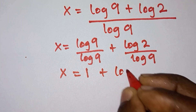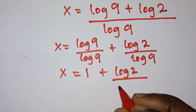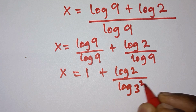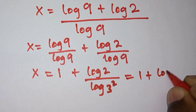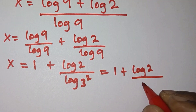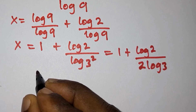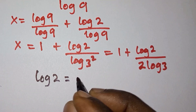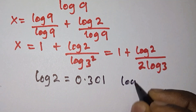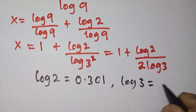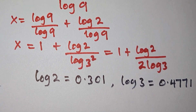Then plus log 2 divided by log 9. Now 9 is the same as 3 to the second power, so we're going to have log 3 to the second power, and we can write this as 1 plus log 2 divided by 2 log 3. Log 2 is equal to 0.301 and log 3 is equal to 0.4771.